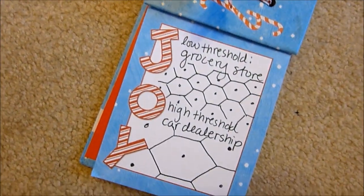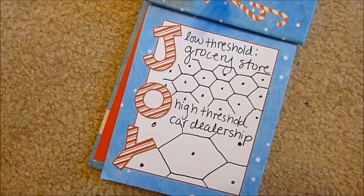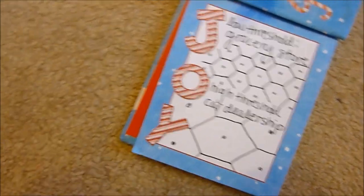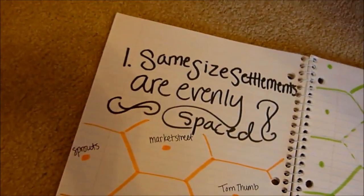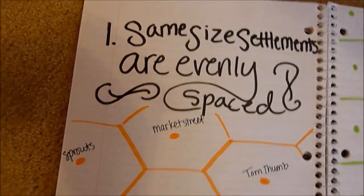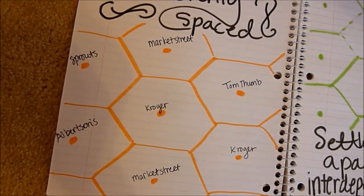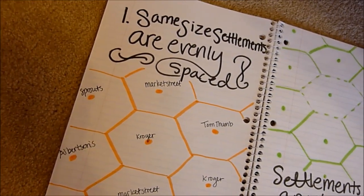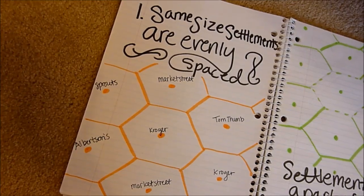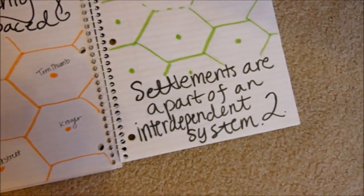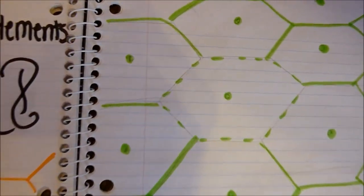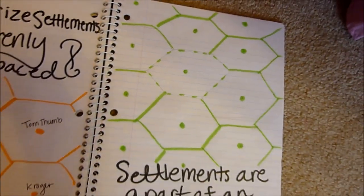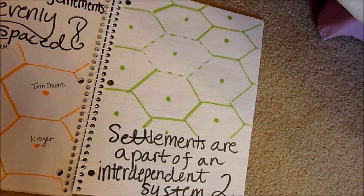Goods with low thresholds are a part of a smaller central place, compared to goods and services with high thresholds, which are a part of a larger central place. Two important conclusions were made from this theory. The first conclusion is that settlements of the same size are evenly spaced because they are in the center of a similar sized hinterland. Settlements of a larger size are spaced farther apart because they have larger hinterlands. The second conclusion is that all settlements are a part of an interdependent system. If one central place disappears, the surrounding central place's hinterlands adjust to fit the needs of the consumers.